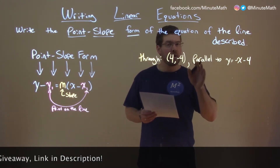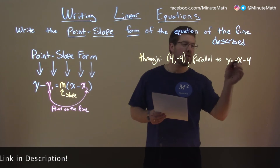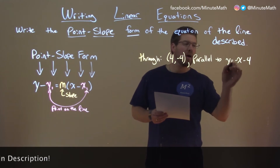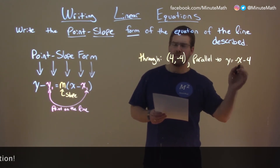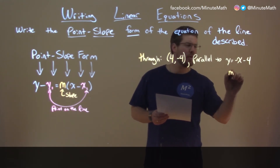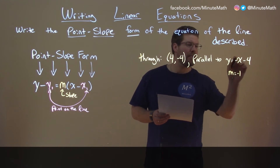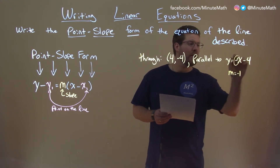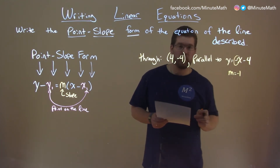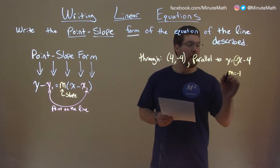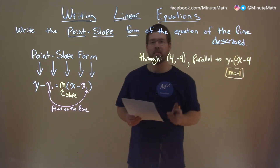We know parallel lines have the same slope. So what's the slope here? y equals negative x minus 4 — that has a slope of negative 1, that value right here, really in front of the x: negative 1. Well, now we have a slope and a point.